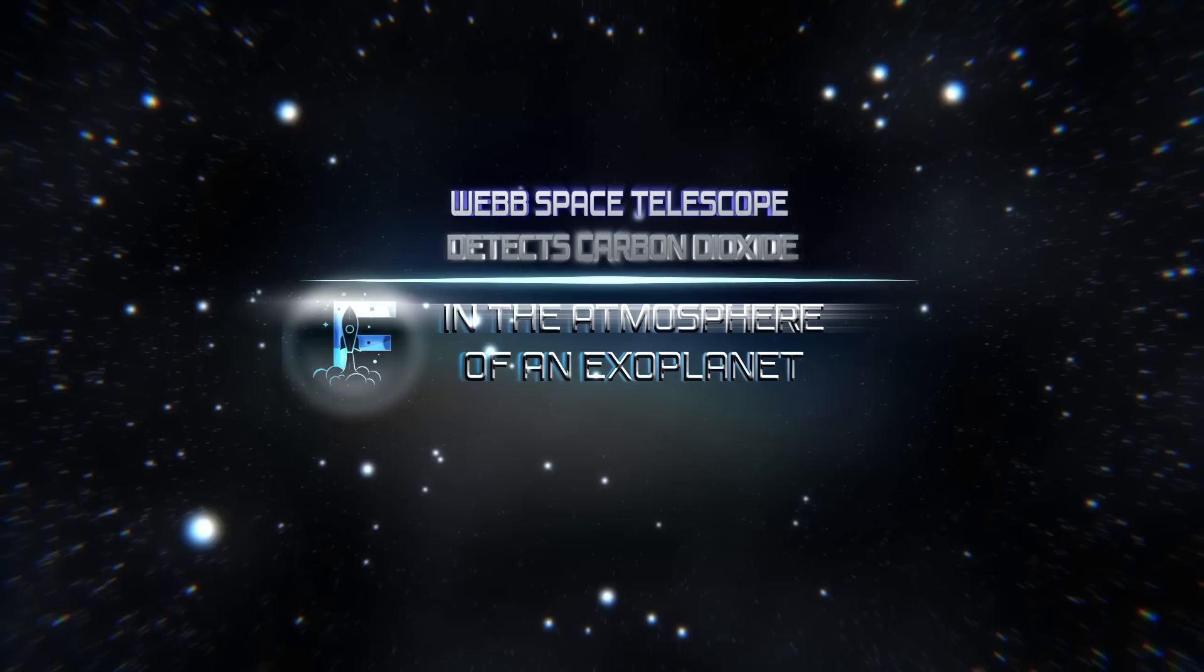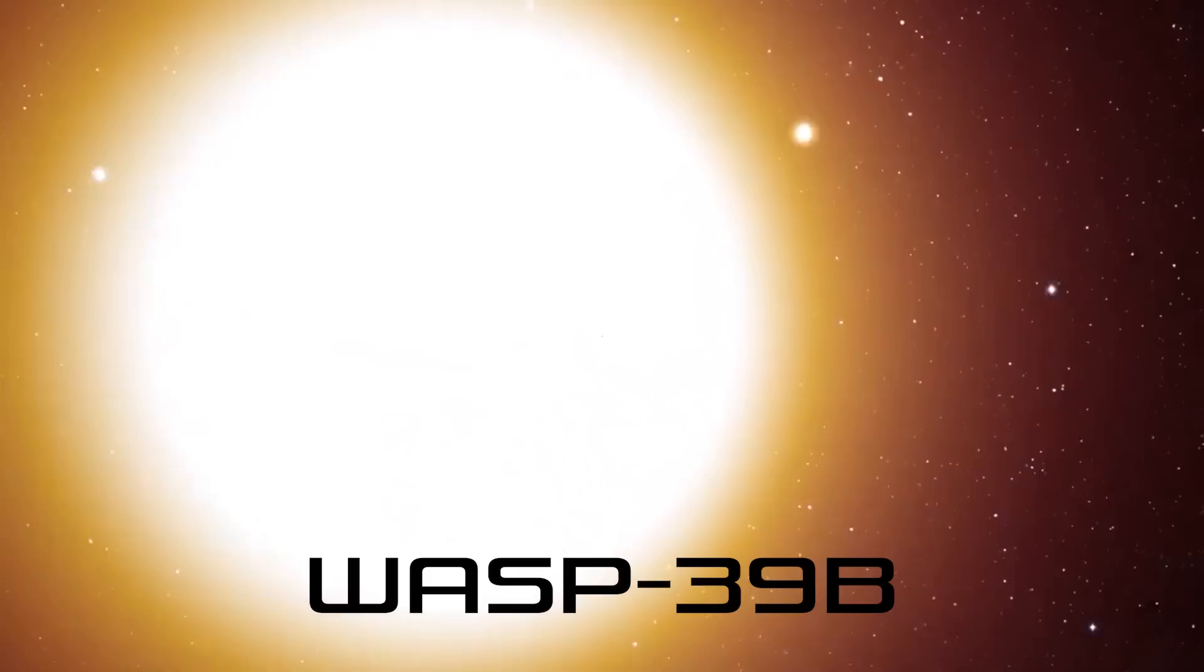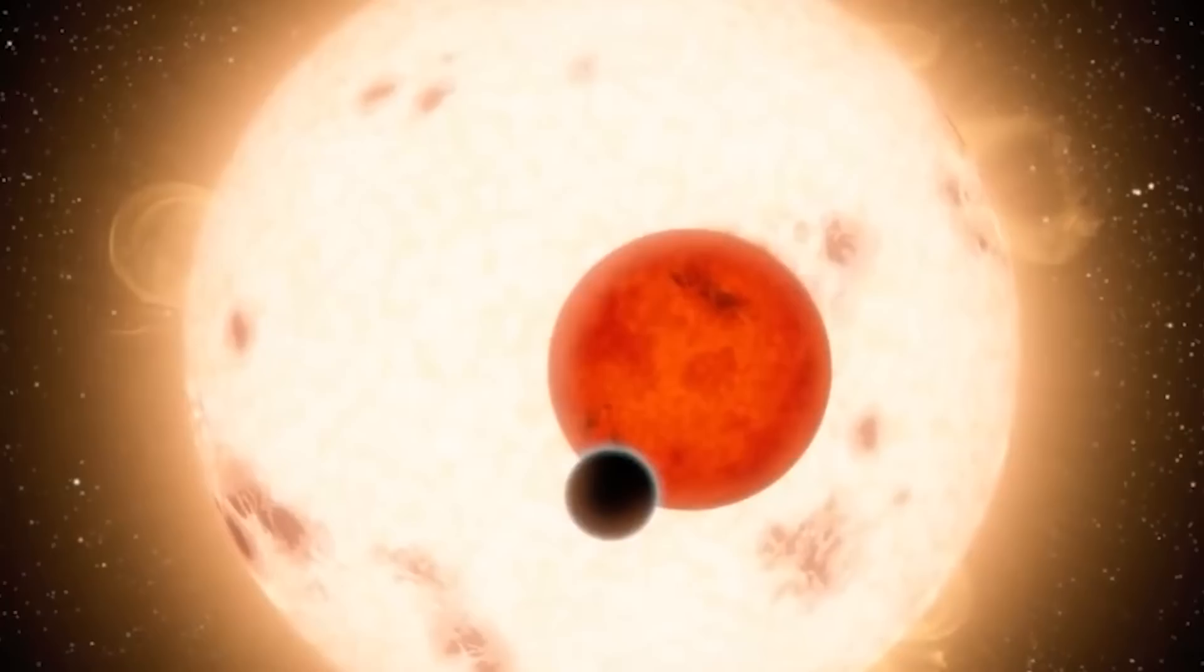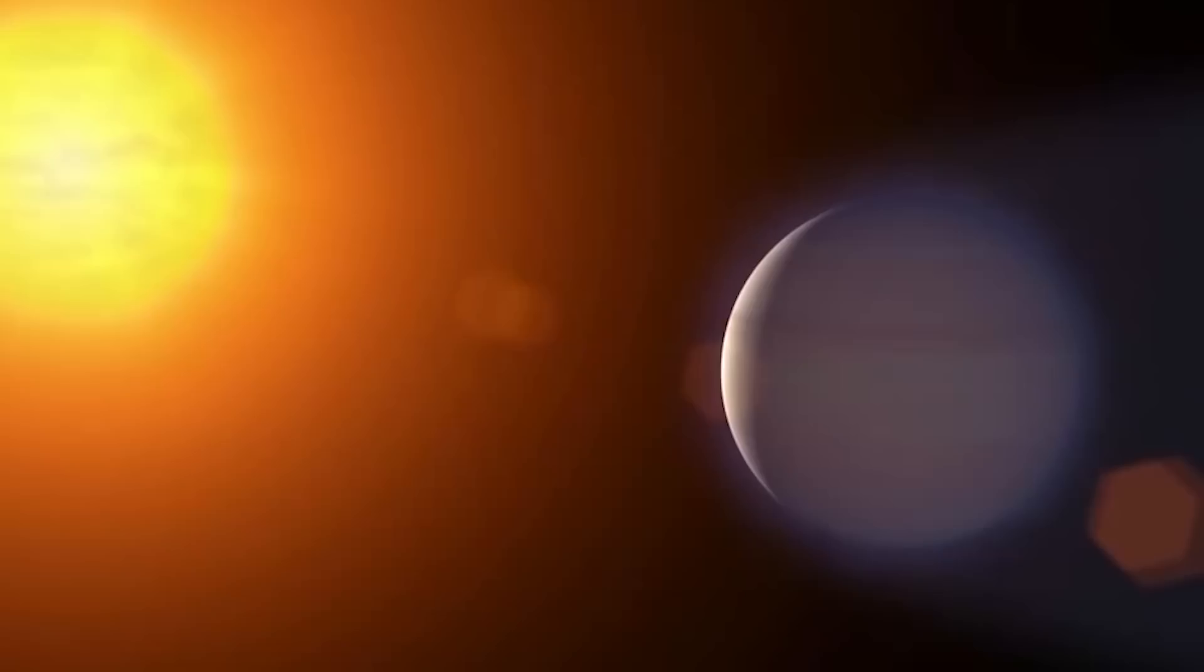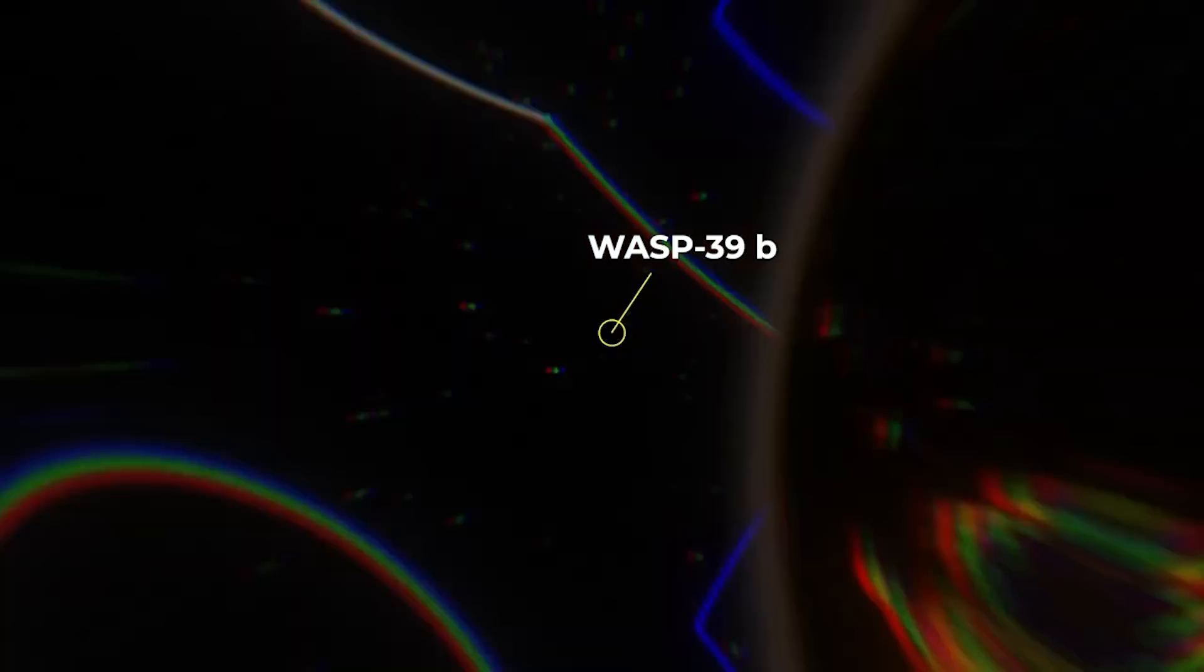The exoplanet WASP-39b is a gas giant exoplanet that orbits a G-type star. It's often described as a hot Jupiter extrasolar planet, which was discovered by the WASP project in February 2011. This exoplanet is located in the Virgo constellation, approximately seven hundred light-years from Earth.